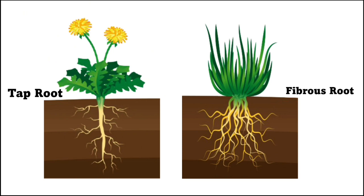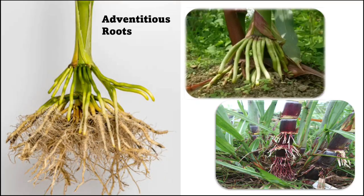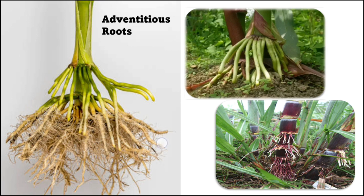Some plants like maize, sugarcane, and sorghum have two types of roots. Some roots are underground, whereas some grow from the stem just above the soil. This type of root is known as adventitious roots.